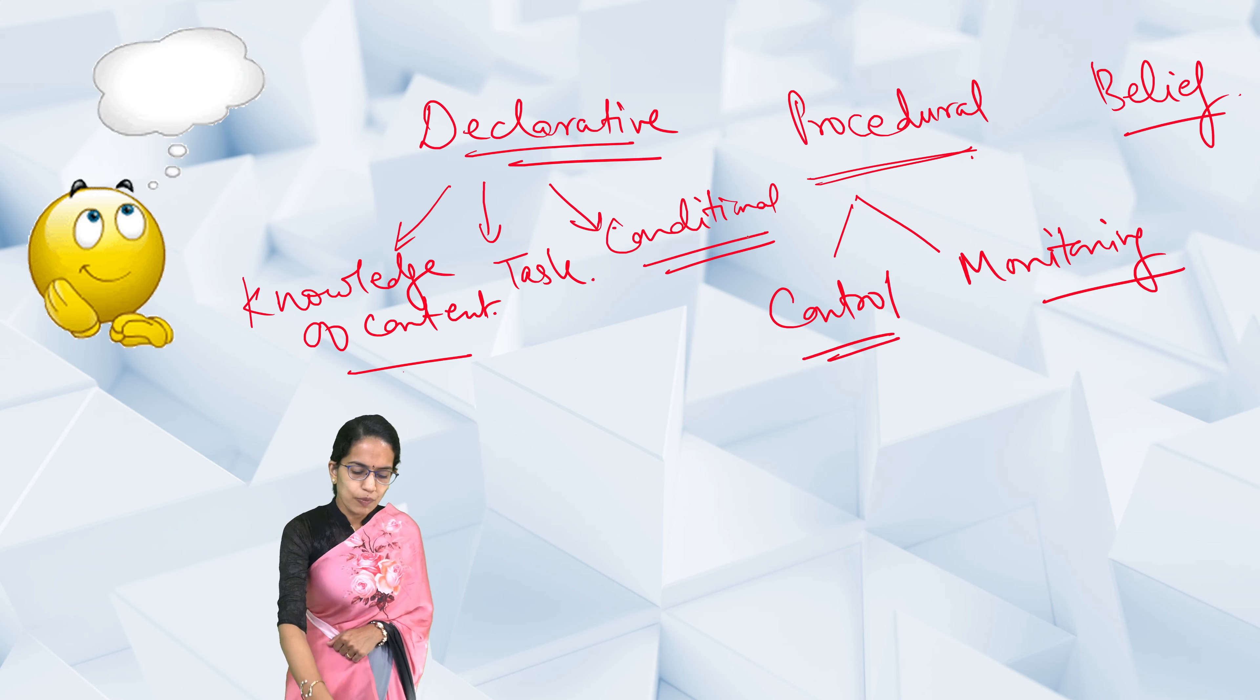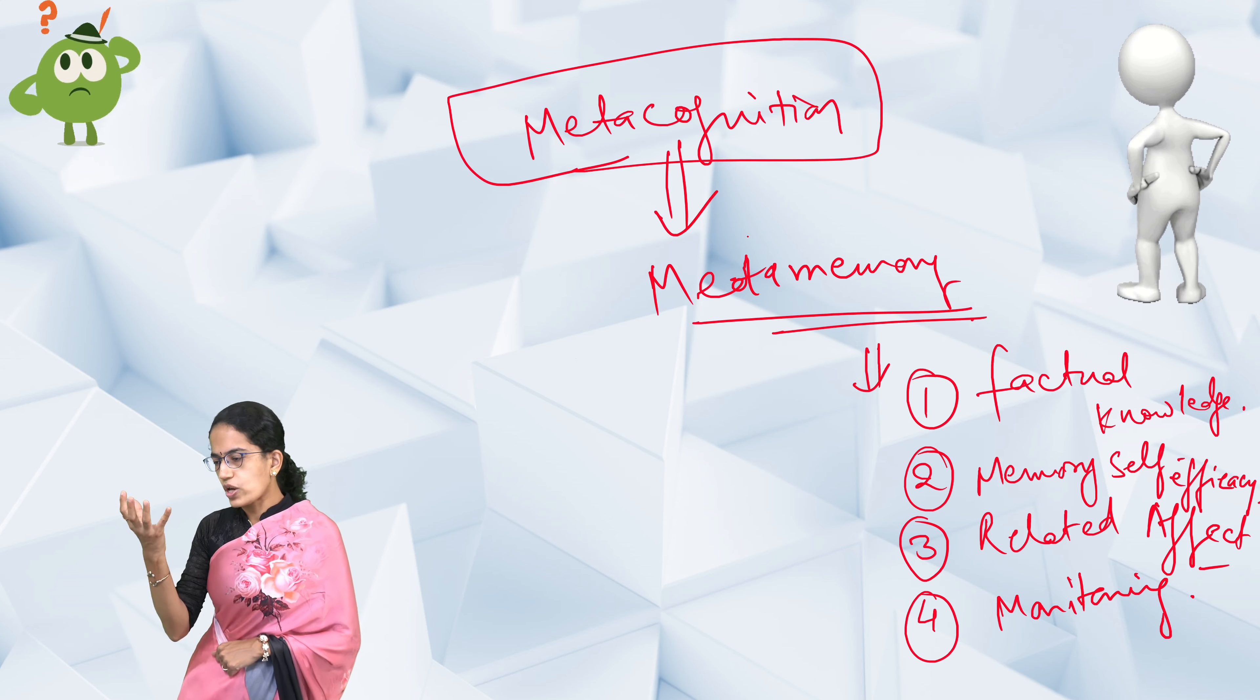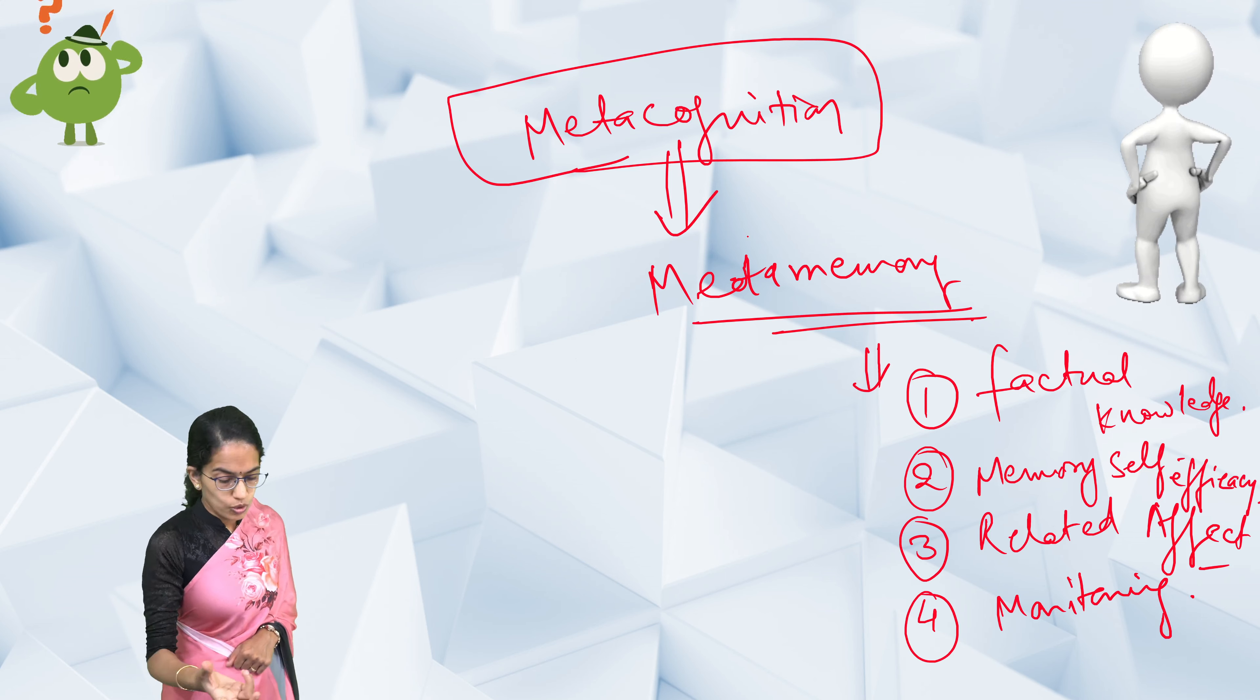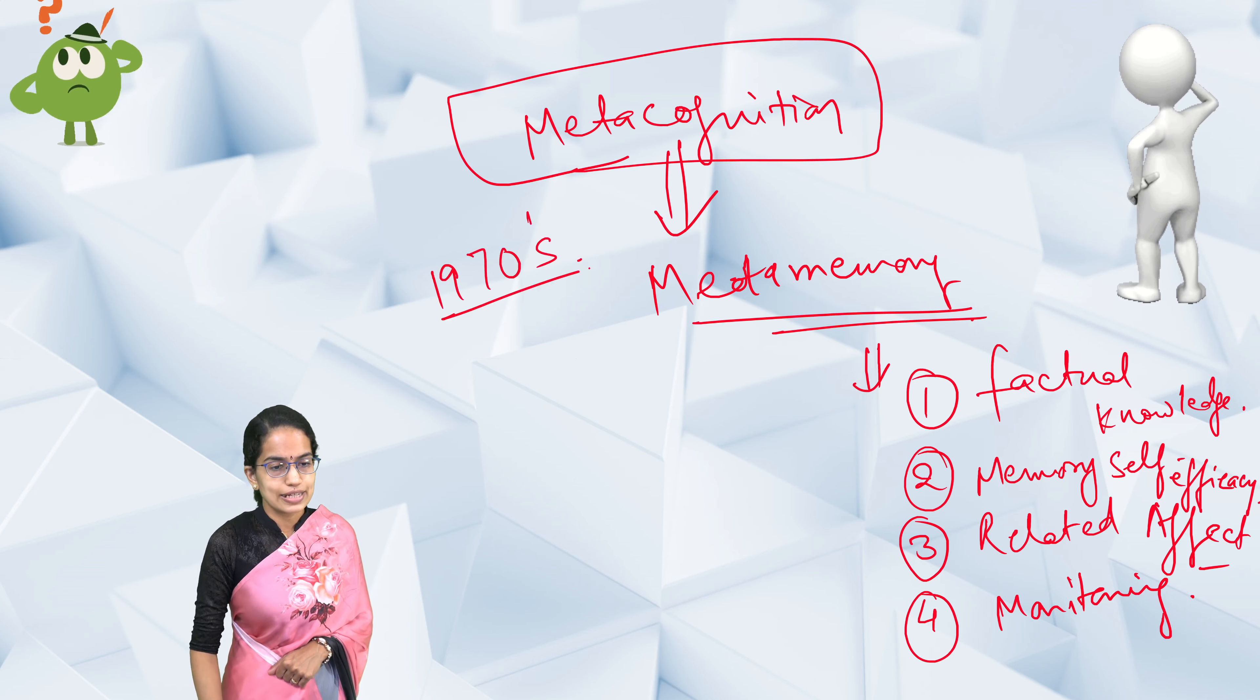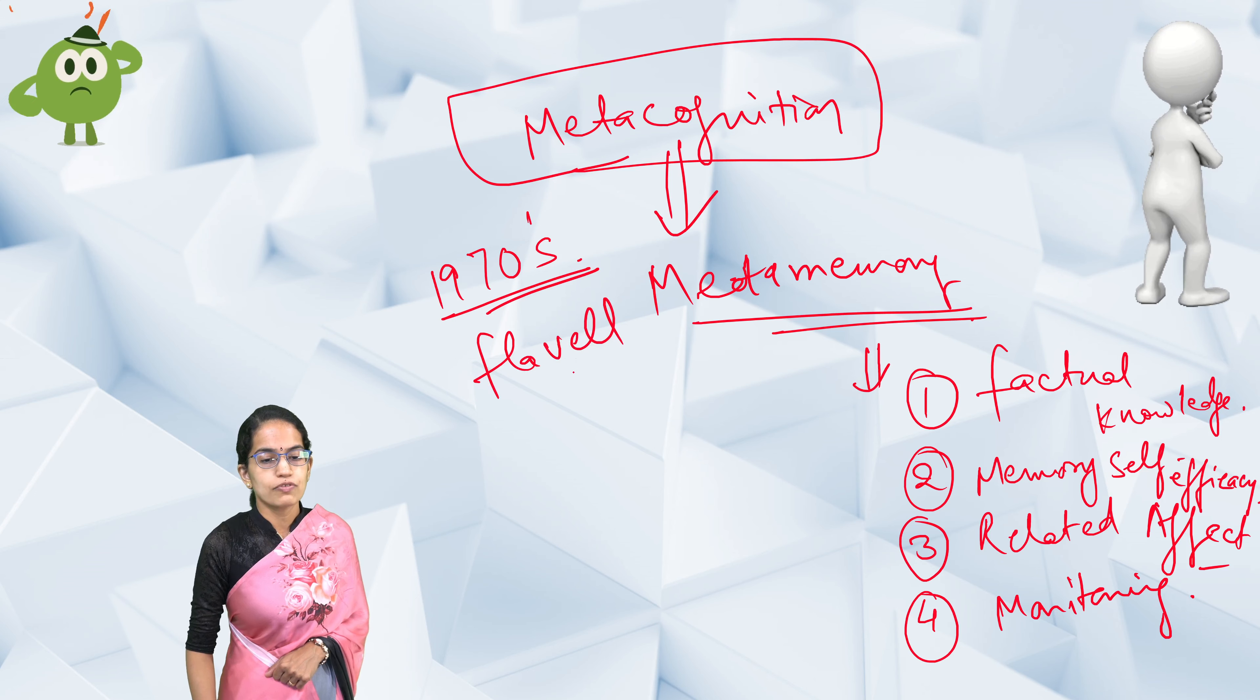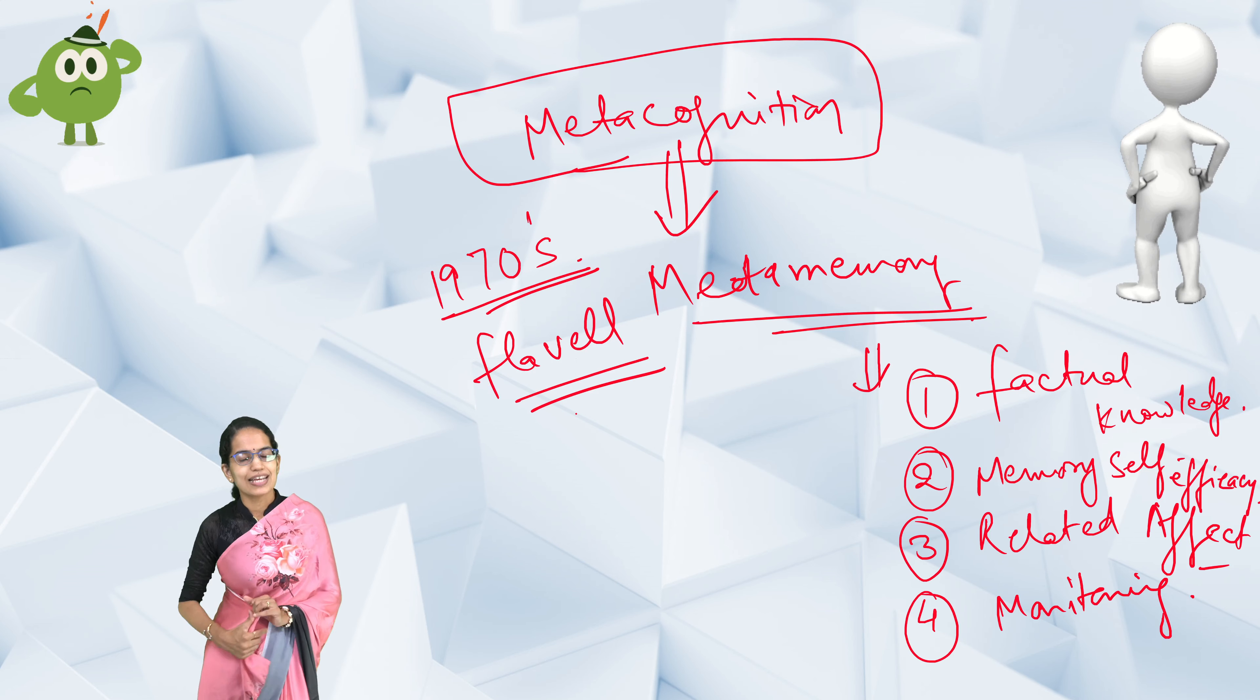These three are important types, or components, of metamemory that help us understand that metamemory is very essential. It focuses on thinking about thinking, on the concepts of the sub-branches of metacognition. This concept was laid down back in the 1970s, a relatively new concept given by Flavell, John Flavell, who propounded this concept of metamemory. In this section, we've covered what metamemory is in psychology.